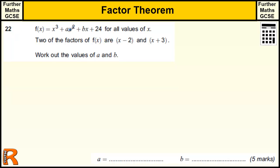We are given a function f of x, where it's equal to x cubed plus ax squared plus bx plus 24. We've got to find the values of a and b, and we're told that two factors of f of x are x minus 2 and x plus 3.